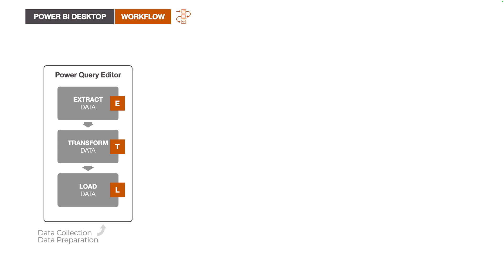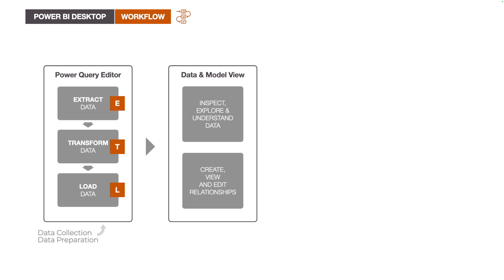After pressing Close and Apply, we leave the Power Query Editor and return to the main Power BI Desktop, where we can now begin with the actual data analysis. Analysis means we inspect the underlying data, explore the cleaned and transformed data, and understand the information we have. For this, we apply different calculations — sums, averages, adding information from different columns — all to make sure that we get insights into our data.